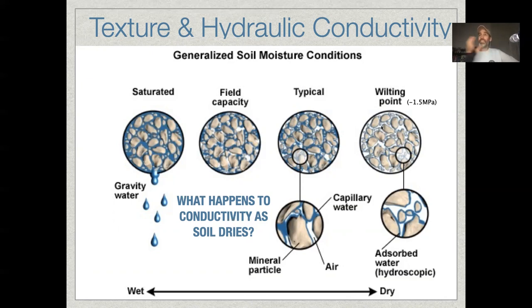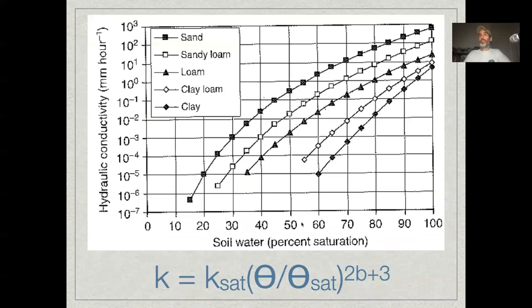So in addition to the matrix potential changing with the soil moisture, we also will find that the soil conductivity also changes with the soil moisture and generally goes down as the soil moisture goes down. So we can look at a chart here that's very similar to what we looked at with the matrix potential. And so again, at a hundred percent saturation, we have the highest conductivity.